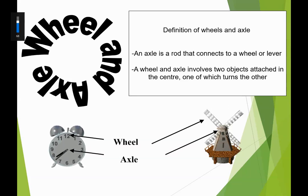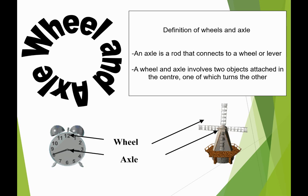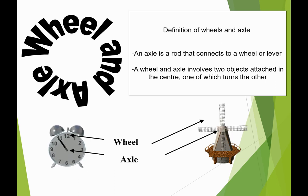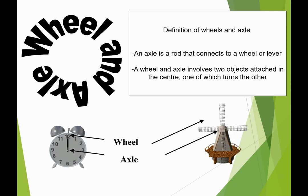In this video I'm going to talk about a wheel and axle. An axle is a rod that connects to a wheel or a lever. A wheel and axle involves two objects attached in the center, one of which turns the other.